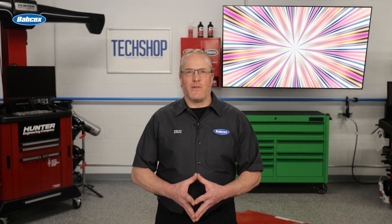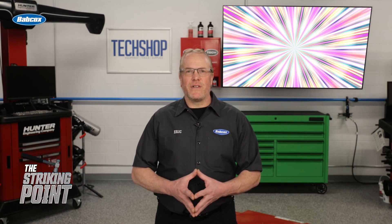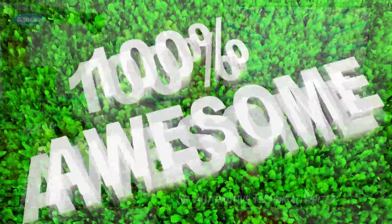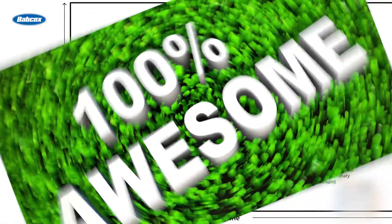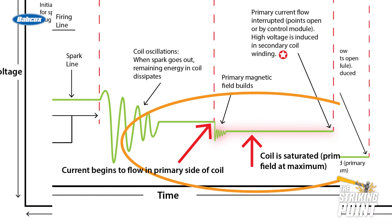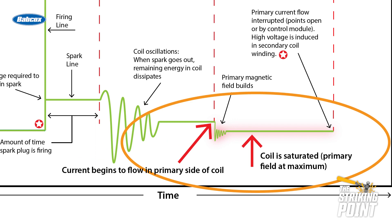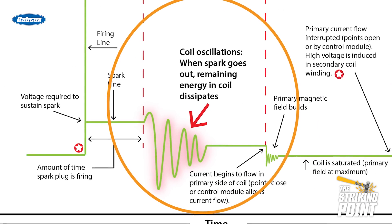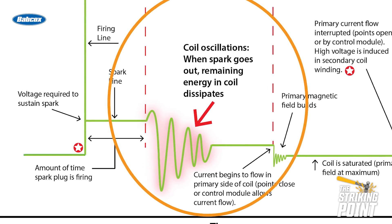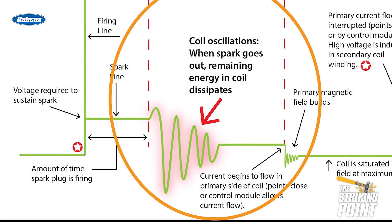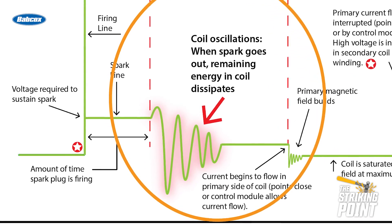If you're not using an oscilloscope for ignition diagnosis, you're missing out on something that is just really cool. You can follow the entire ignition waveform from where the current begins to flow on the primary side and saturates the coil, all the way through to the secondary, to after the spark when the remaining energy in the coil dissipates and the entire ignition cycle starts all over again.